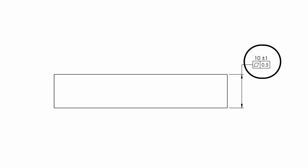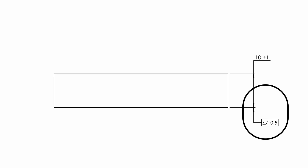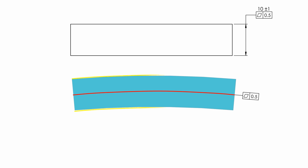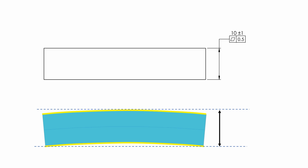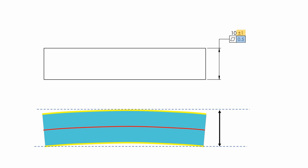When a flatness tolerance is attached to a dimension like this, or positioned over the dimension line, it means the flatness tolerance is controlling the flatness of the median plane created by the top and bottom surfaces, and this affects the flatness of both surfaces together. So my question to you is: what would be the maximum envelope boundary of this plate thickness, including the size deviation plus minus 1 mm and flatness deviation 0.5 mm — or in GD&T terms, what would be the actual mating envelope size for this thickness?